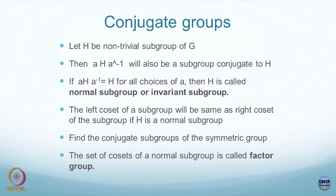The left coset of the same subgroup will be the same as the right coset if H is a normal subgroup. We have already done this — finding the conjugate subgroups of the symmetric group — I have explicitly done it for you.